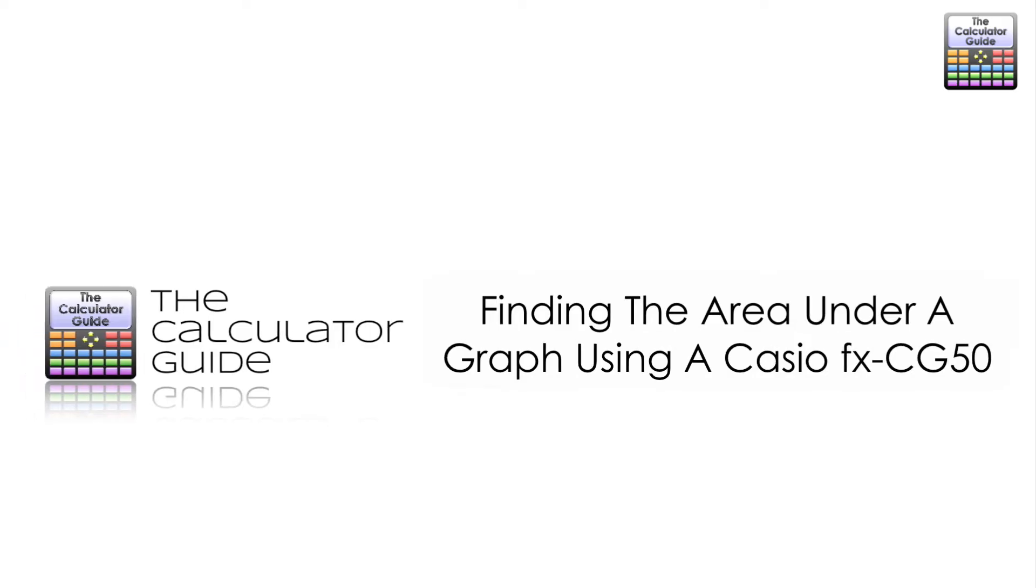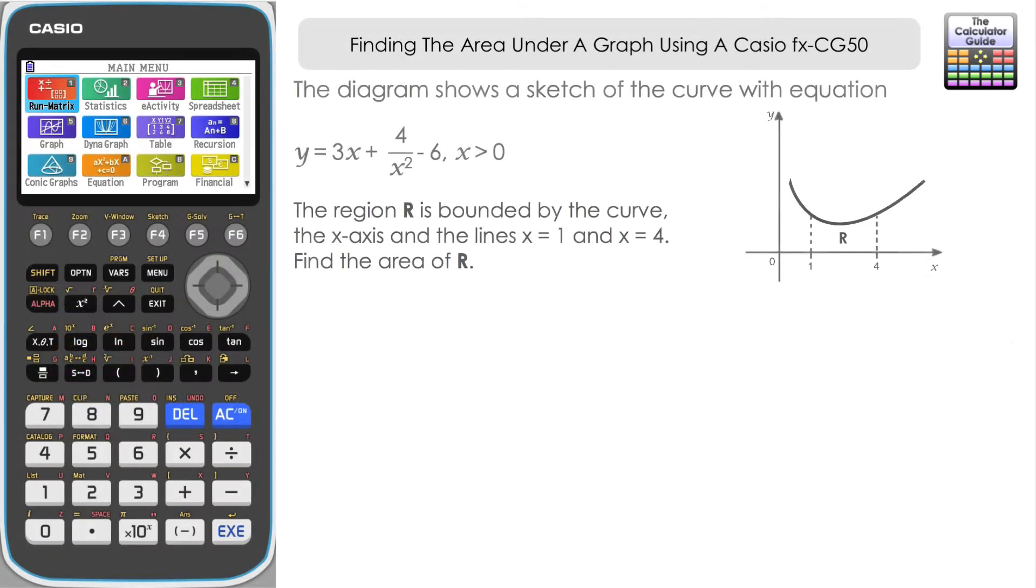Hello and welcome to the calculator guide video on finding the area under a graph using a Casio fx-CG50. Two examples in this video of drawing the graph of a function and then using the fx-CG50 to find the area that is under the graph but above the x-axis between certain limits.